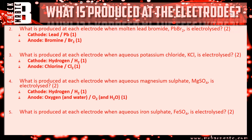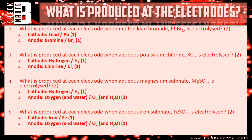Question five - iron sulfate aqueous: iron is in the transition metals therefore it's unreactive, therefore iron will form at the cathode. Similar to question four, you've got sulfate, therefore oxygen and water will be produced at the anode.